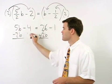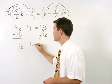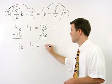That gives us 3b minus 4 equals negative 1.